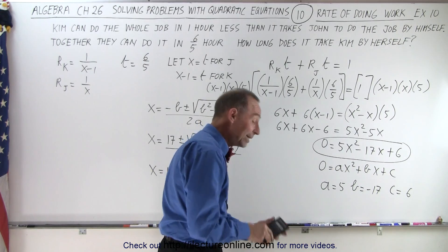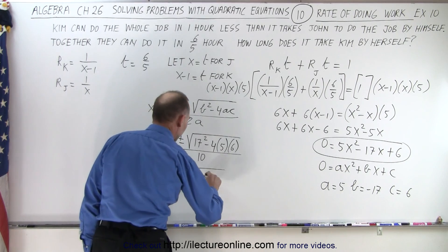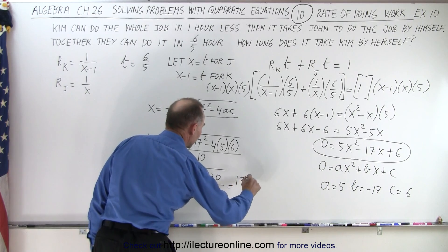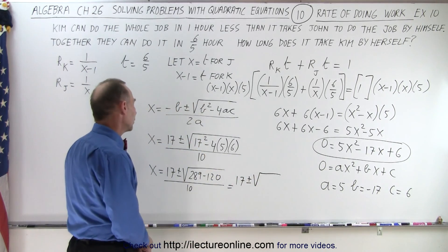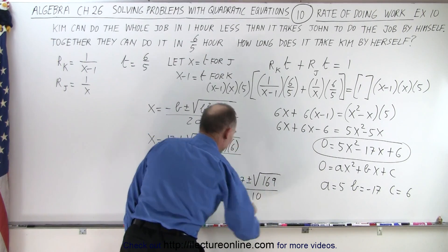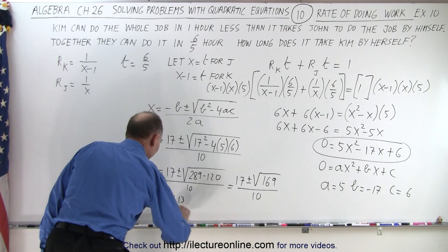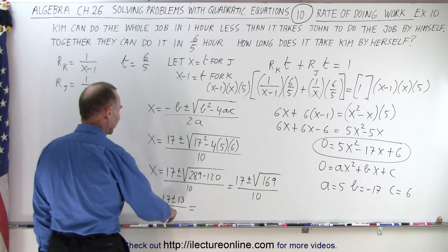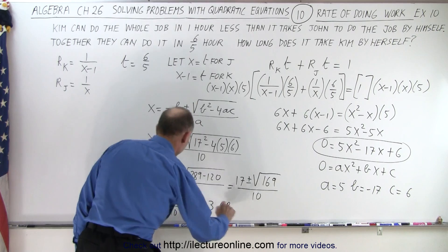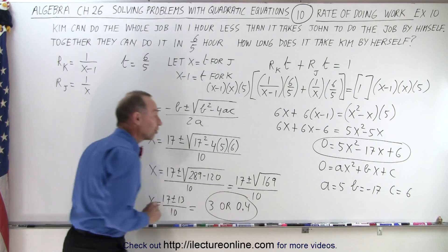17 squared is 289, so that's 289 minus 120, all divided by 10, which is 17 plus and minus the square root of 169, divided by 10. That gives x equals 17 plus and minus 13, divided by 10, which is equal to 30 over 10 equals 3, or 4 over 10 equals 0.4. So we have two possible answers for x.